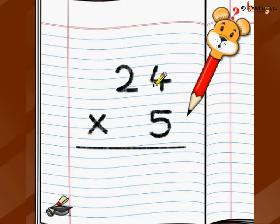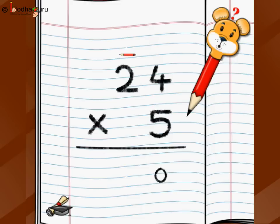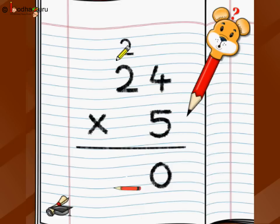Now we again multiply 5 with each digit going from right towards left — that is, starting from the ones position then going to the tens position. So five multiply by four is twenty. Twenty is 2-0, so we write the zero in the ones position and carry the two over to the next position, just like we do carry-over in addition. So five multiply by four was twenty: zero we write here and two we carry over.